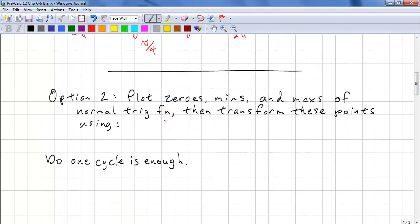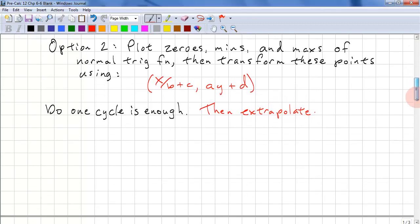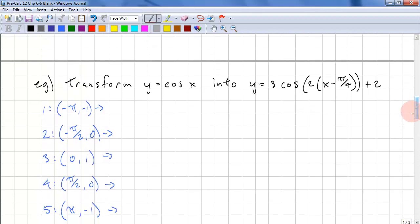Another option is to plot the zeros, min, and max of the normal trig function. Then transform these points using x over b plus c, a times y plus d. And you want to just do one cycle because the sinusoidal functions are cyclic. After you've done one cycle, then extrapolate. So doing periodic functions is pretty easy if you take advantage of the fact that it's periodic and repeats. So let's do that with our example.